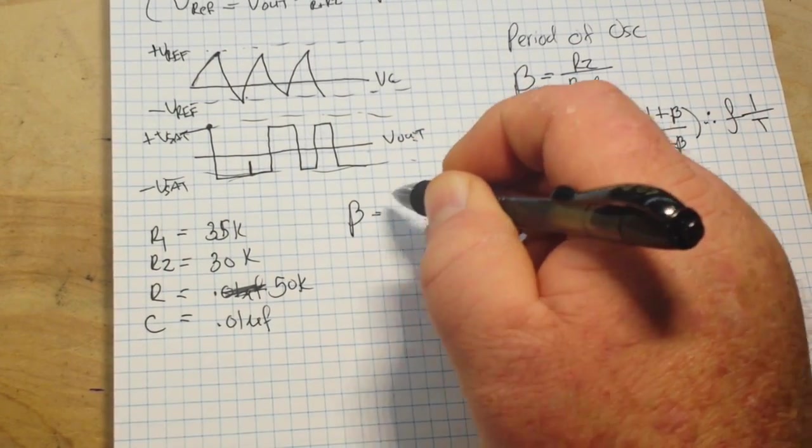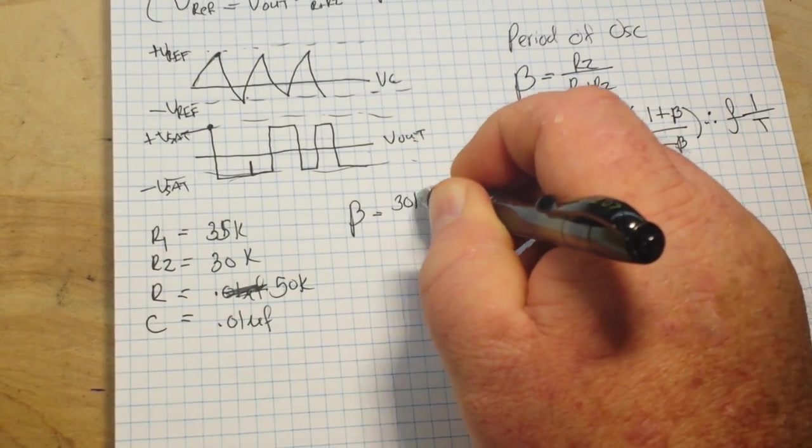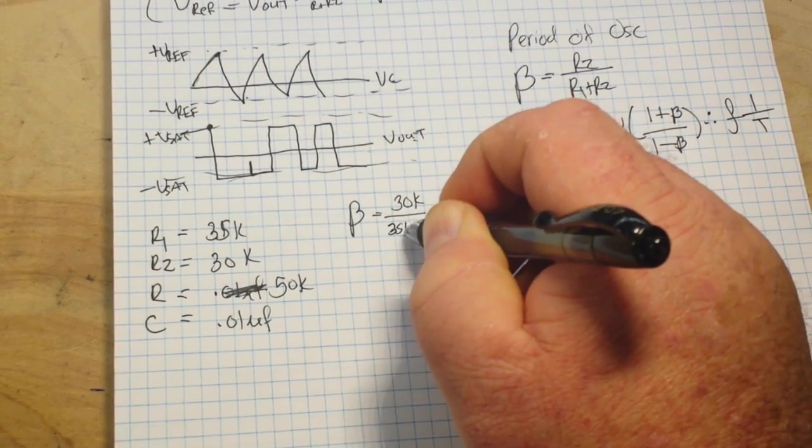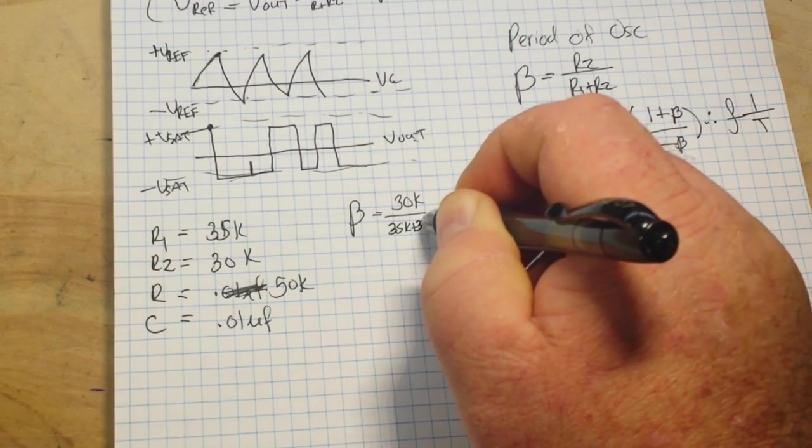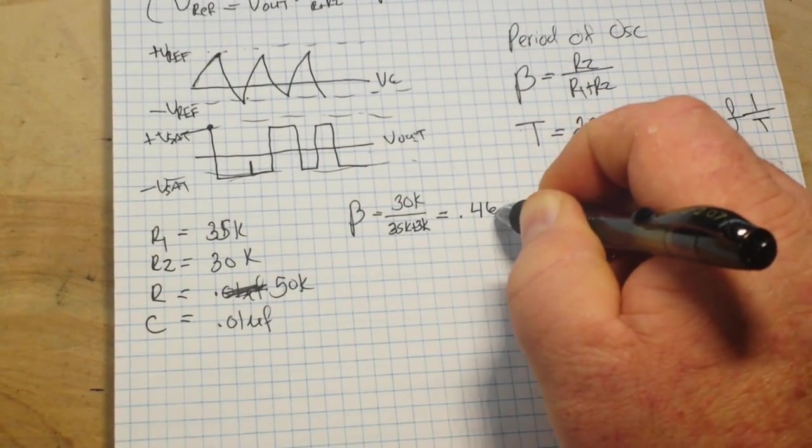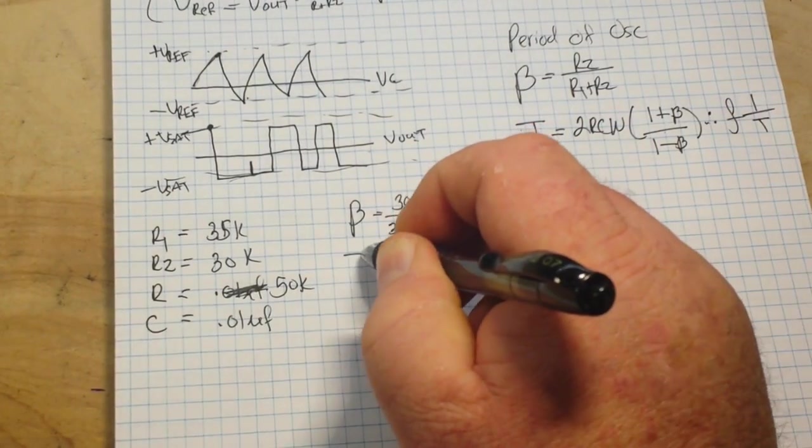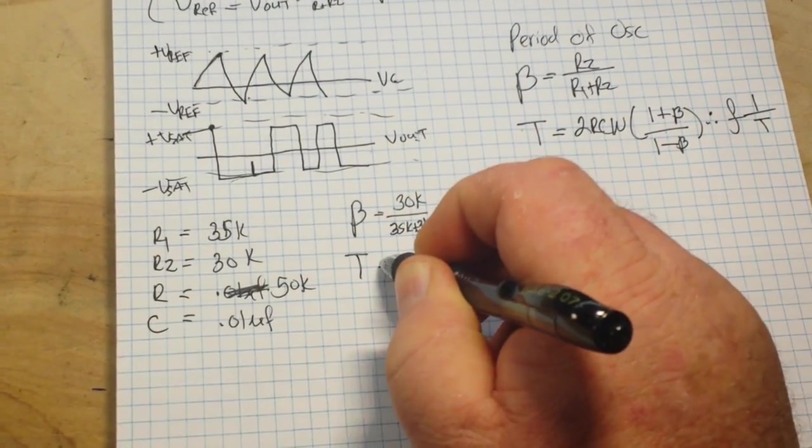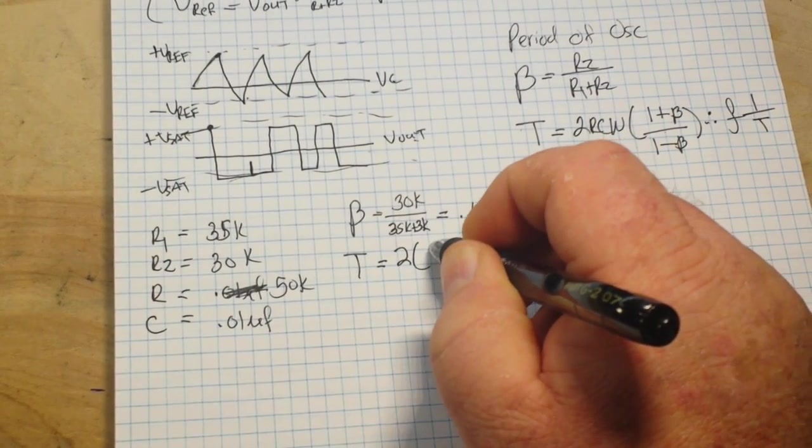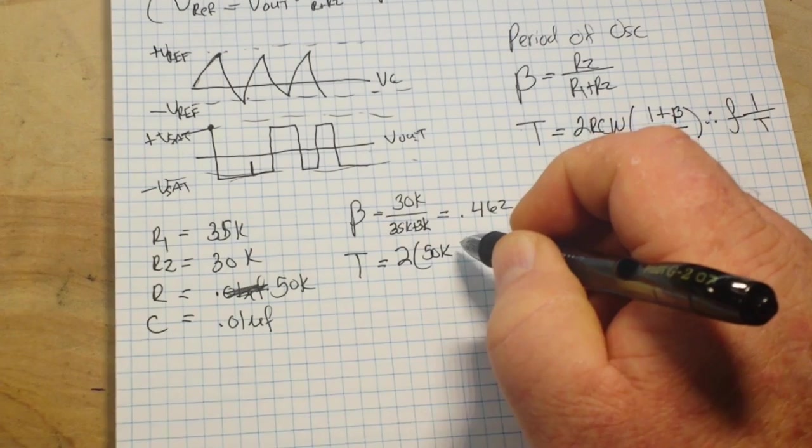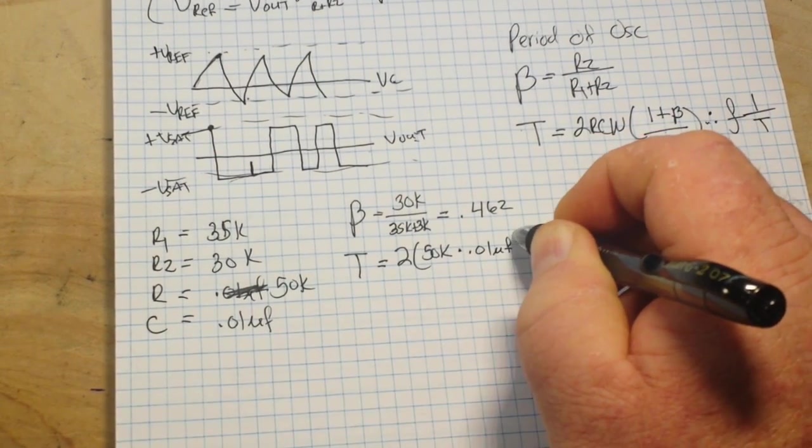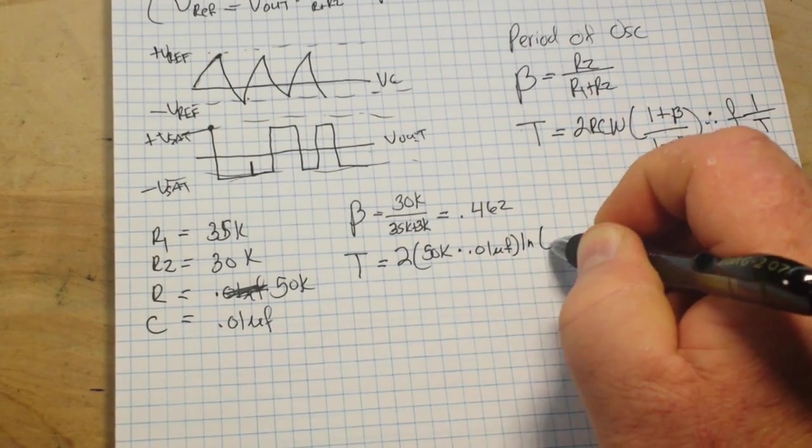we can say our feedback β equals 30k over 35k plus 30k, giving us 0.462. And our time is 2 times 50k times 0.01 microfarads times the natural log,